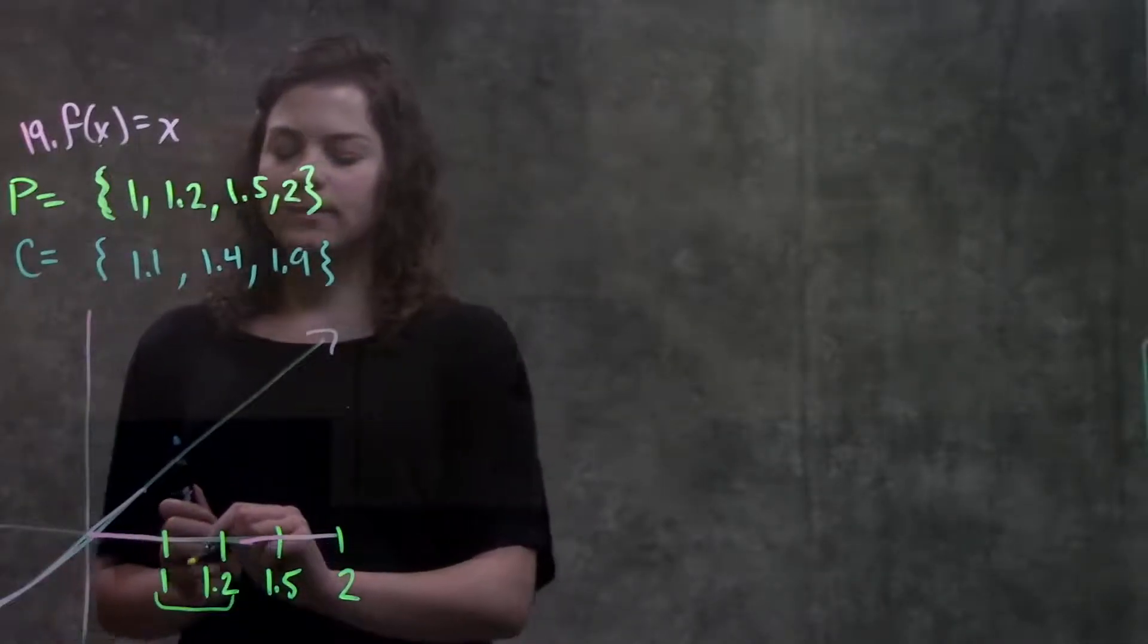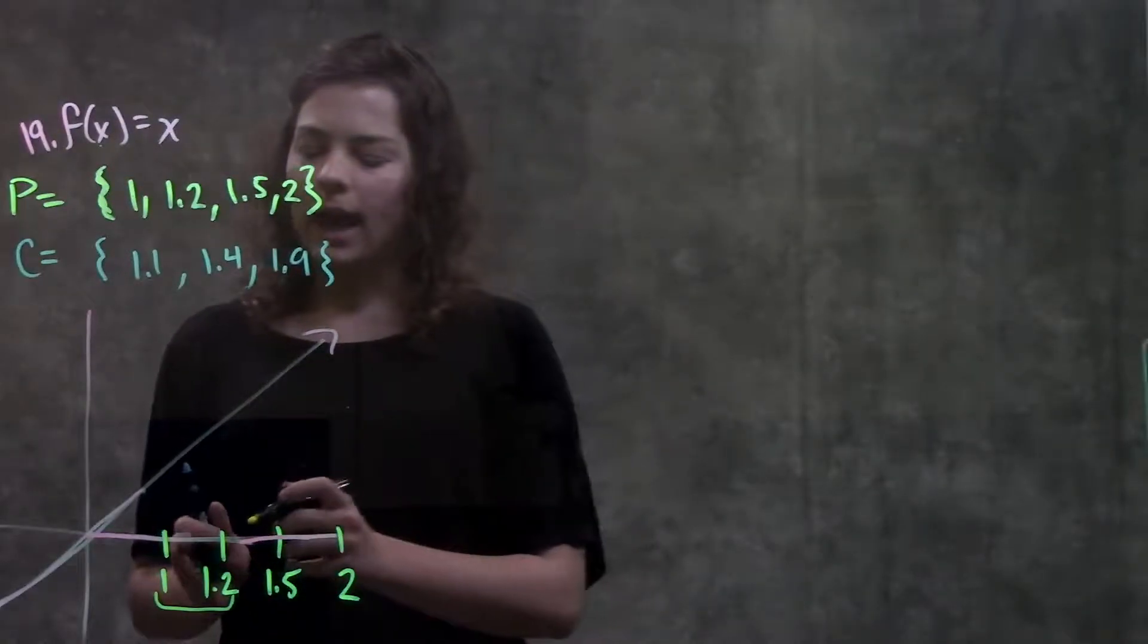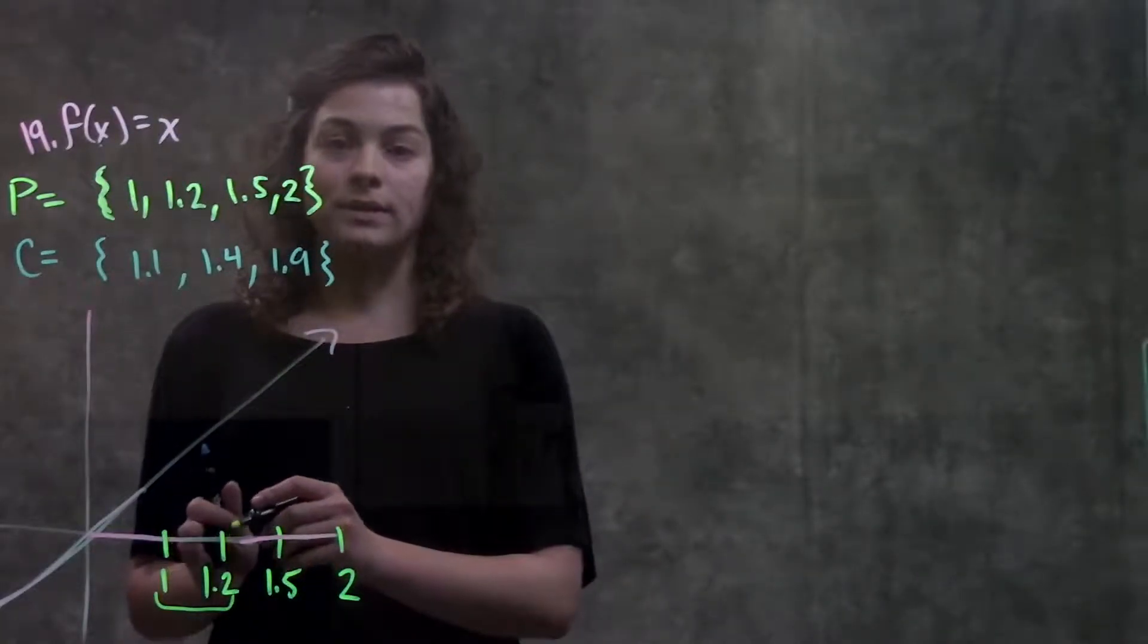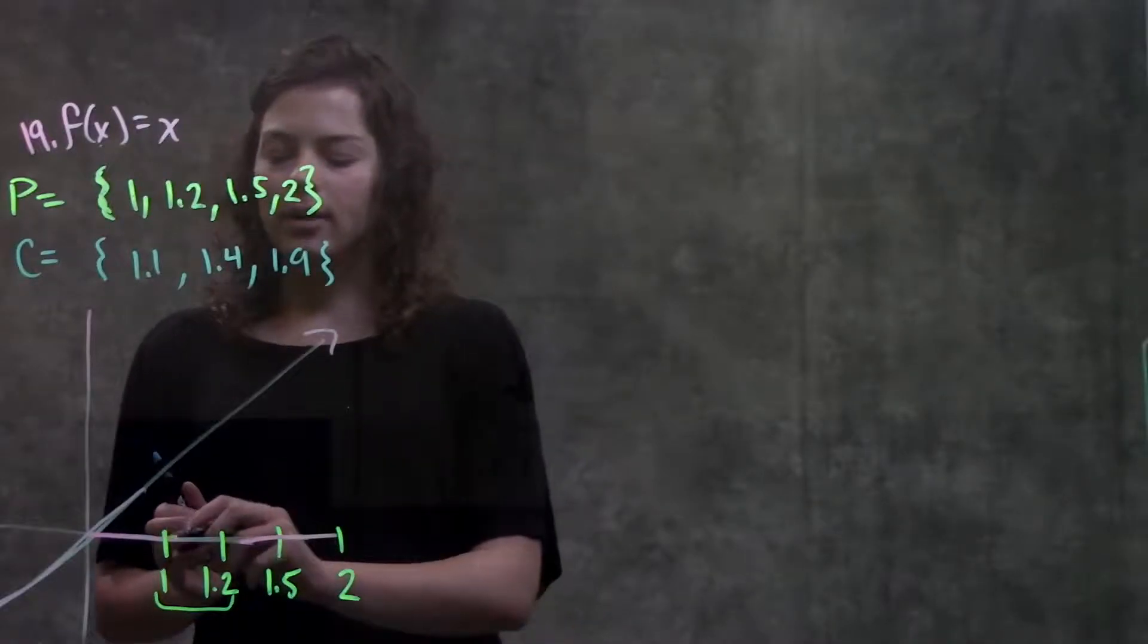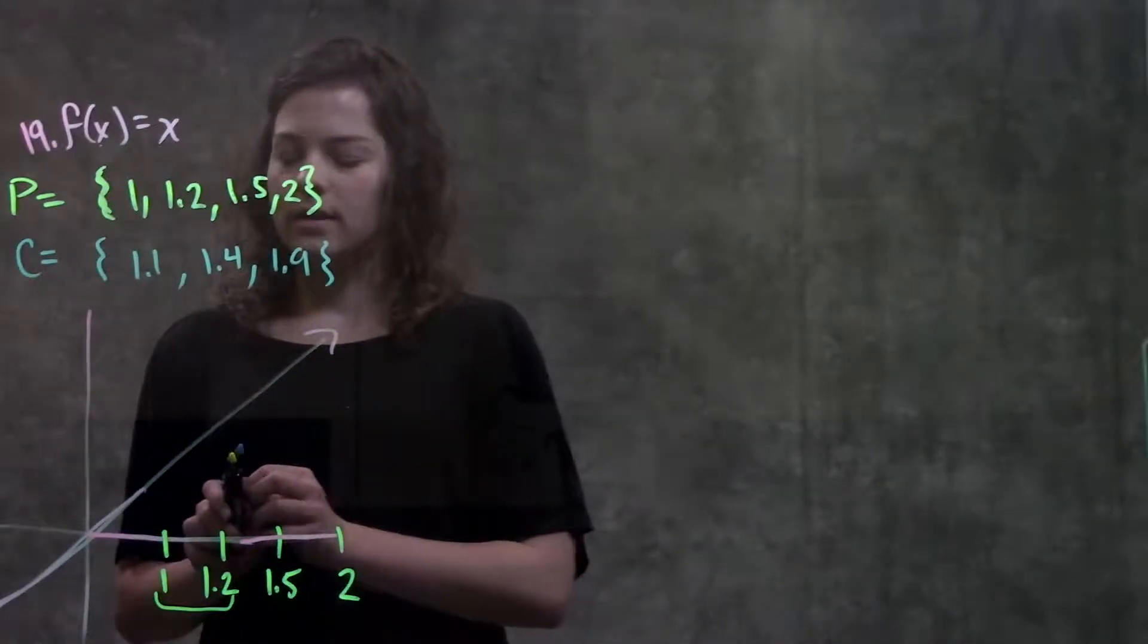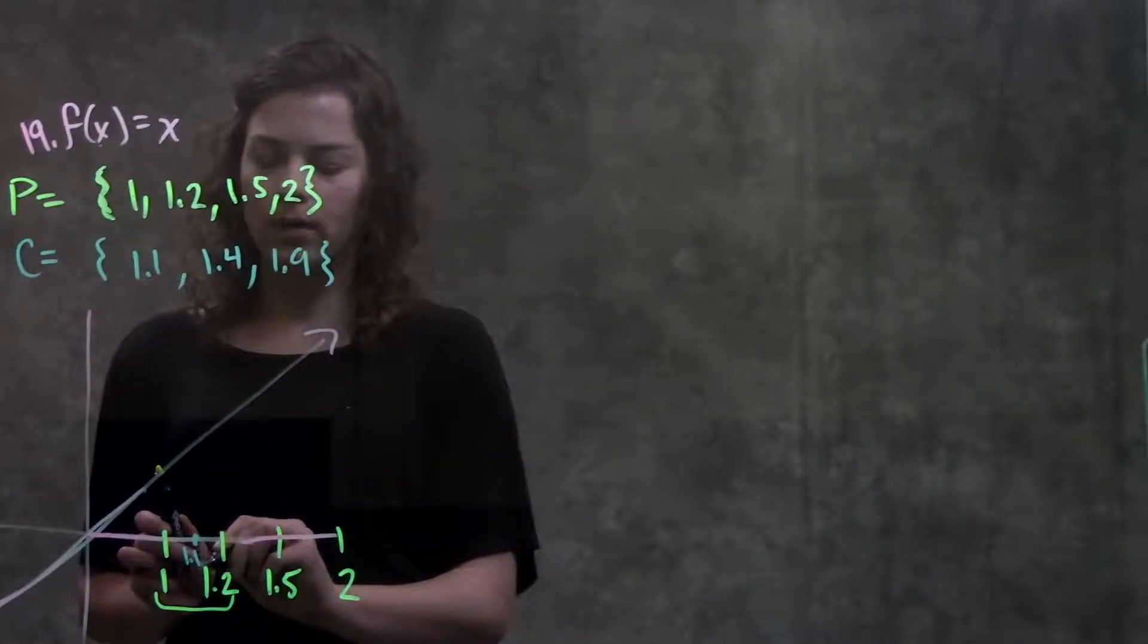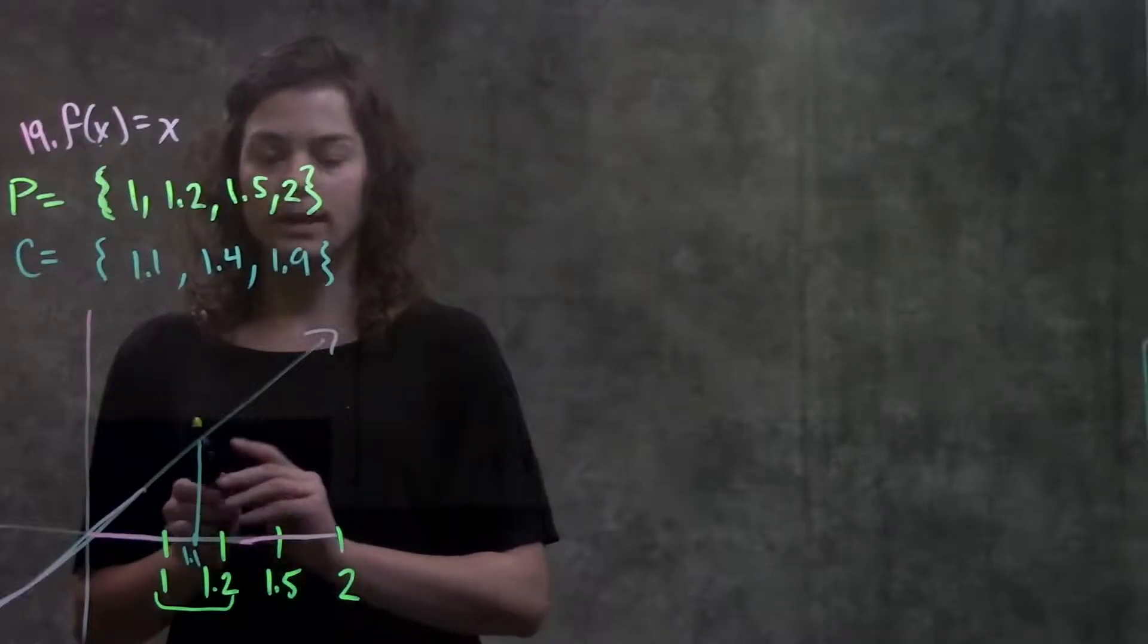So what's different between this problem and the types of problems where they ask us for the right and left endpoints is that they're not using one of these endpoints to find the height of their rectangle. They're picking some point in the middle. So for this first width, the point that they picked in the middle was 1.1. So here, 1.1, that's where my height of the rectangle is.